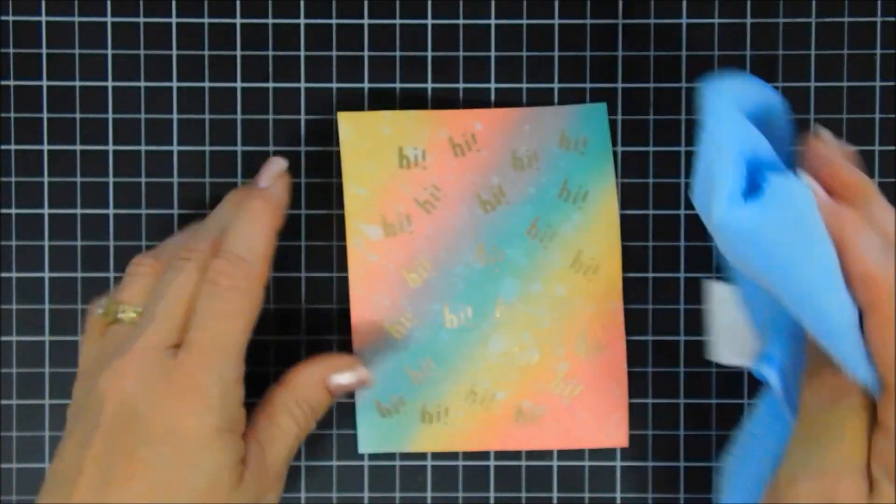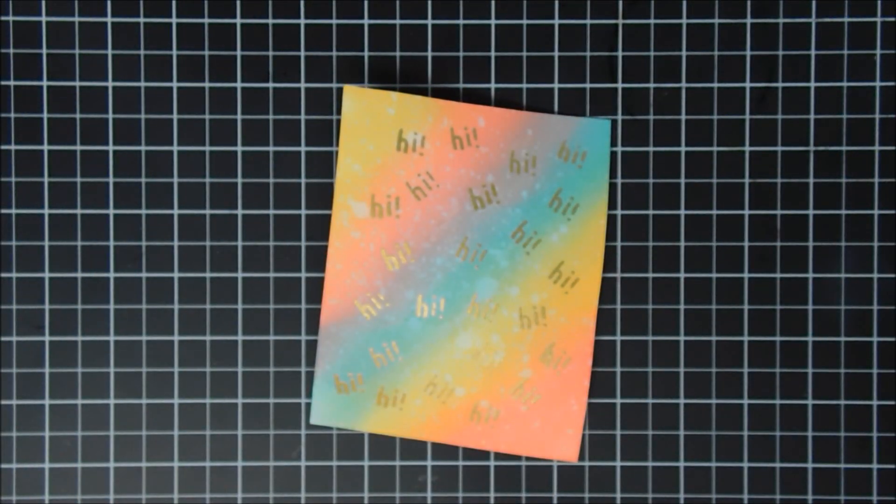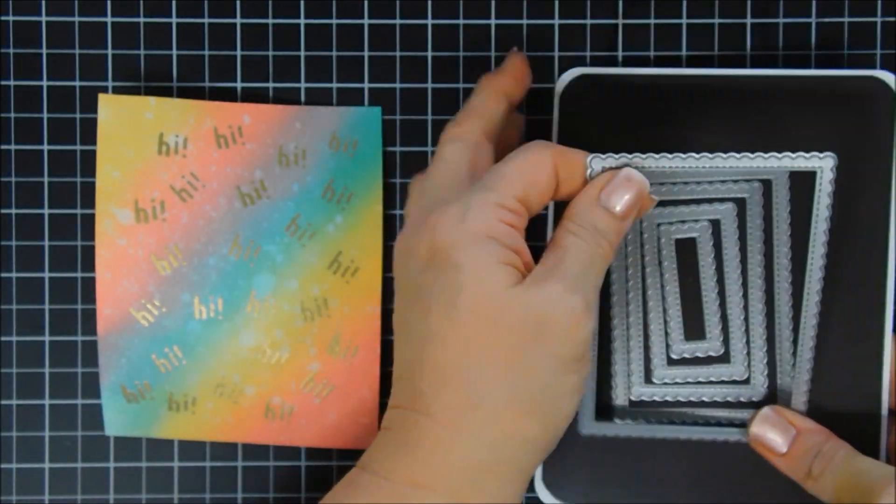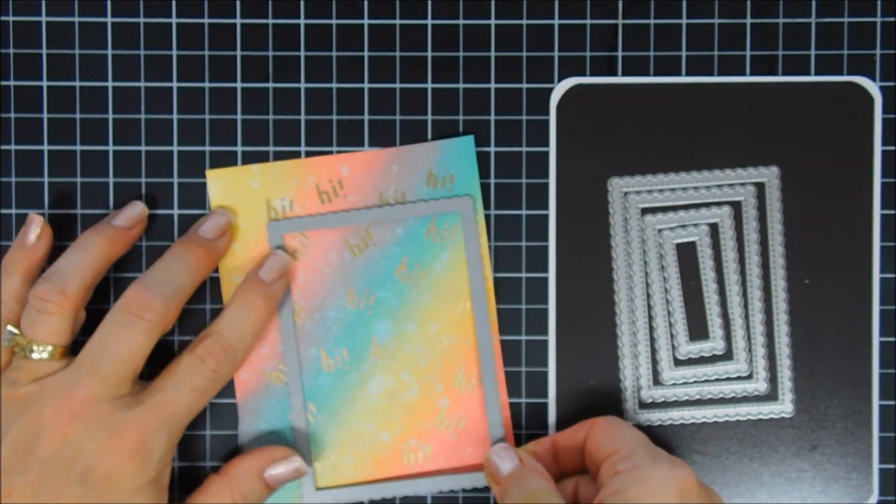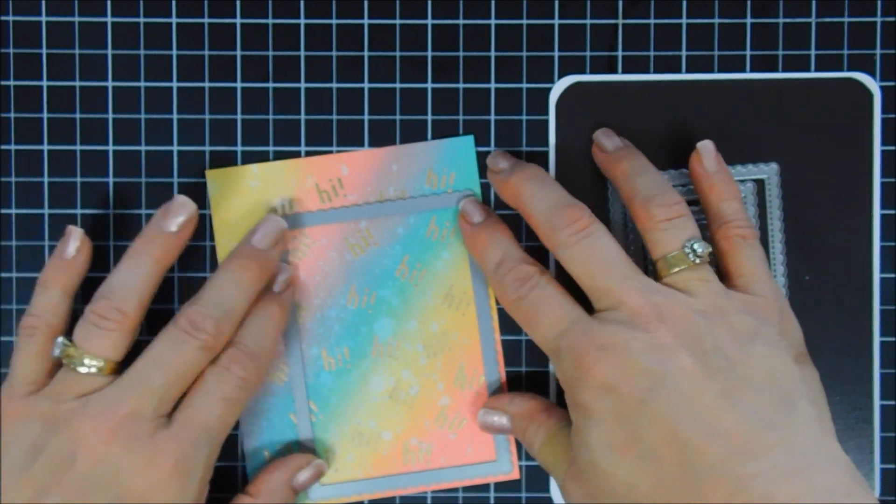Okay, now we're going to do some die cutting on our background panels. I'm going to be using a scallop stitched rectangle die and cut out my background with the largest one that I have here.